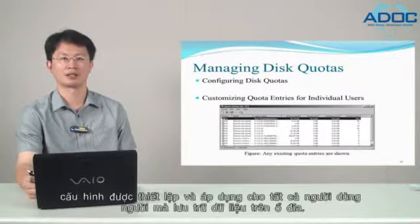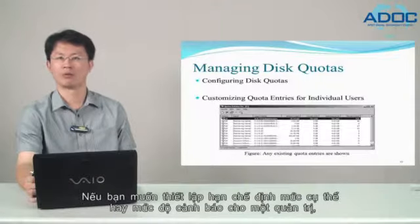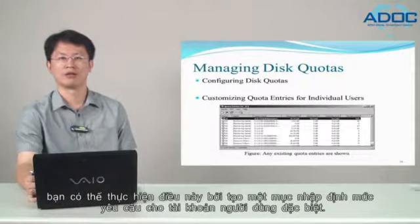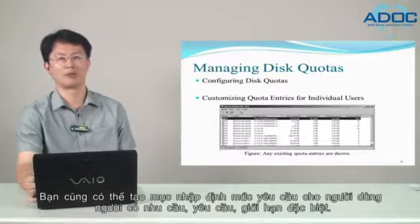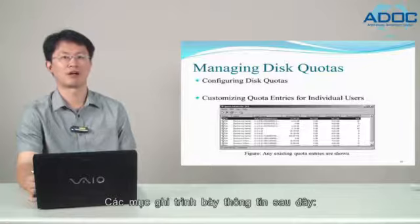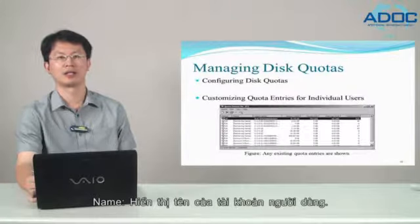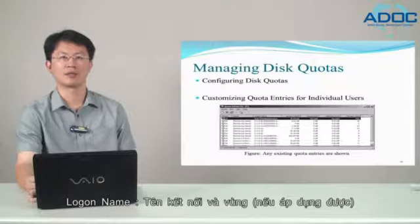After you enable disk quotas, the configuration applies to all users who store data on the volume. If you want to set a specific quota limit or warning level for an individual user, you can do this by creating a custom quota entry for that particular user account. You can also create custom quota entries for users who have special needs, requirements, or limitations. Any existing quota entries are shown in a figure, displaying entries with status, name, and logon name with domain if applicable.